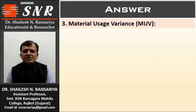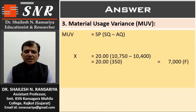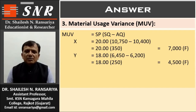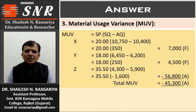Number 3, Material Usage Variance. MUV = SP × (SQ − AQ). For X: 20 × (10,750 − 10,400) = 20 × 350 = 7,000 favorable. For Y: 18 × (6,450 − 6,200) = 18 × 250 = 4,500 favorable. For Z: 35.5 × (4,300 − 5,900) = 35.5 × (−1,600) = −56,800 adverse. Total MUV = −45,300 adverse.